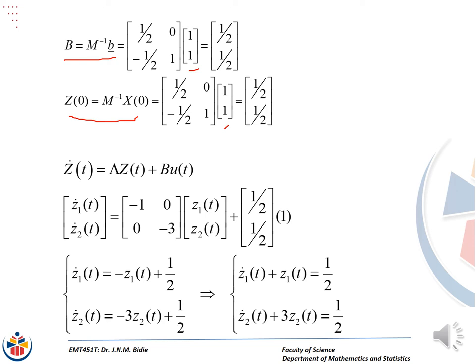The next step is to write an expression for Z_dot. We substitute the spectral matrix, Z, capital B, and u equal to 1 (the Heaviside function for t ≥ 0). Performing the multiplication, we come up with equations and write them in standard form. They are first order differential equations — both of them — and since we have P and Q terms, we can use the integrating factor to solve for both Z1 and Z2.